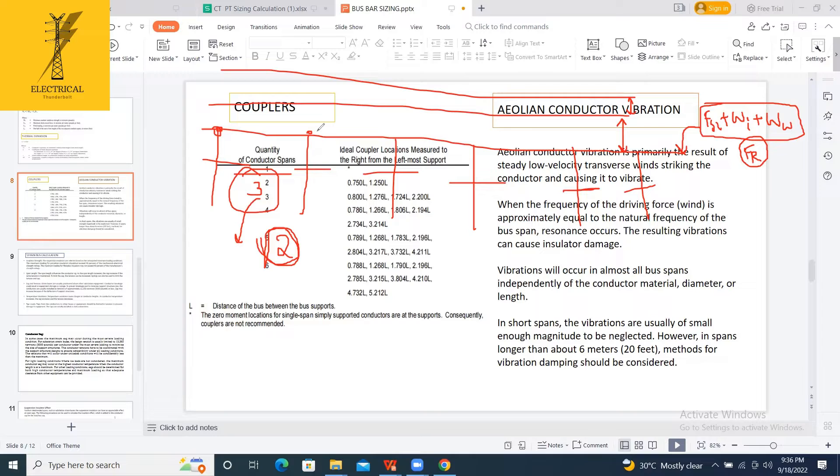And also, this thermal expansion, why is this required? Because generally, this aluminum pipe, you cannot get 100 meters long. Obviously, the aluminum pipes will be 3 meters long or 5 meters long. You will get pieces only.